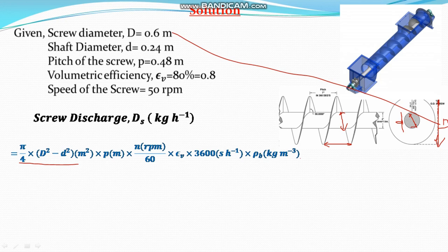Through which the grains will be conveyed. Therefore, the velocity into the area there is discharge. Area into velocity is discharge.